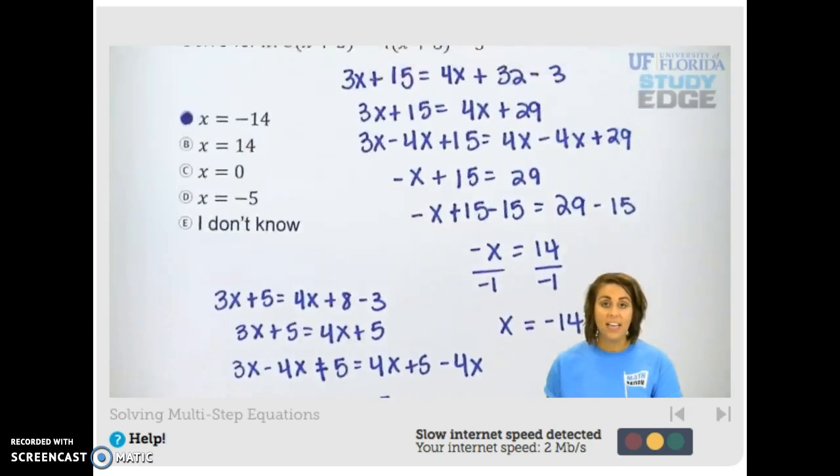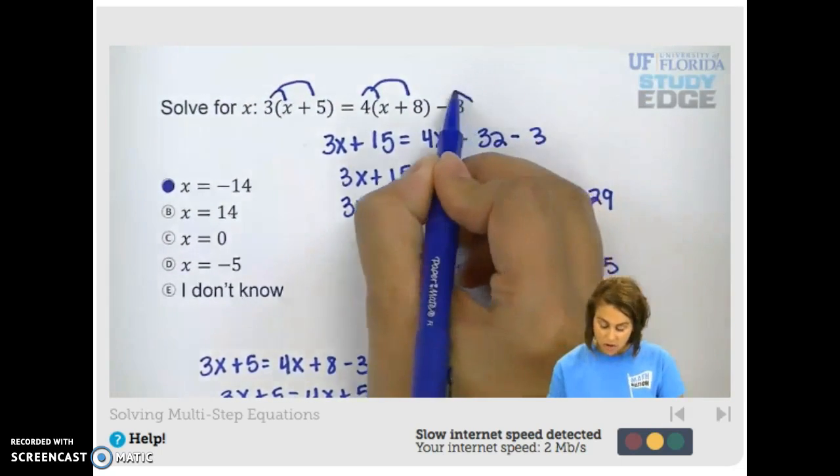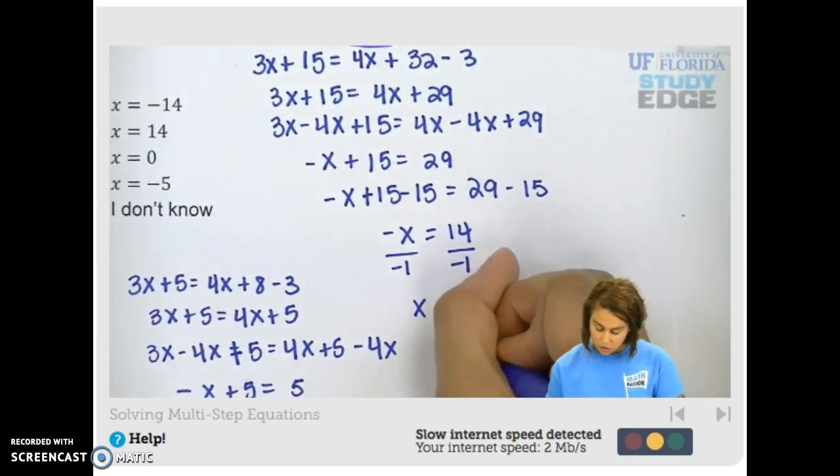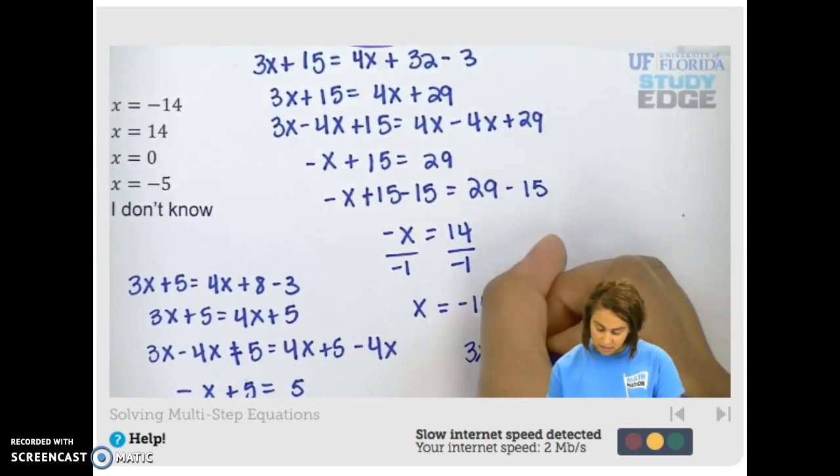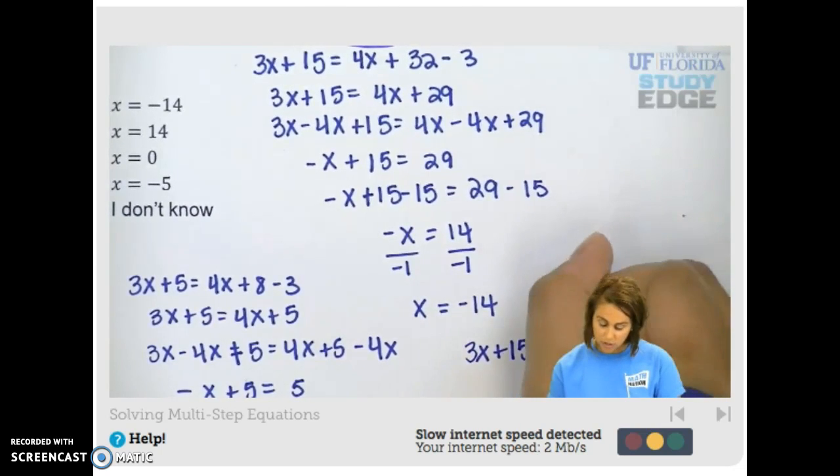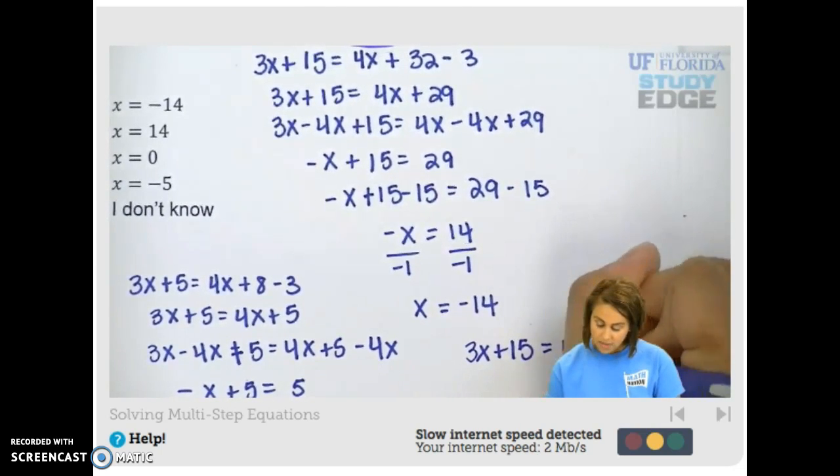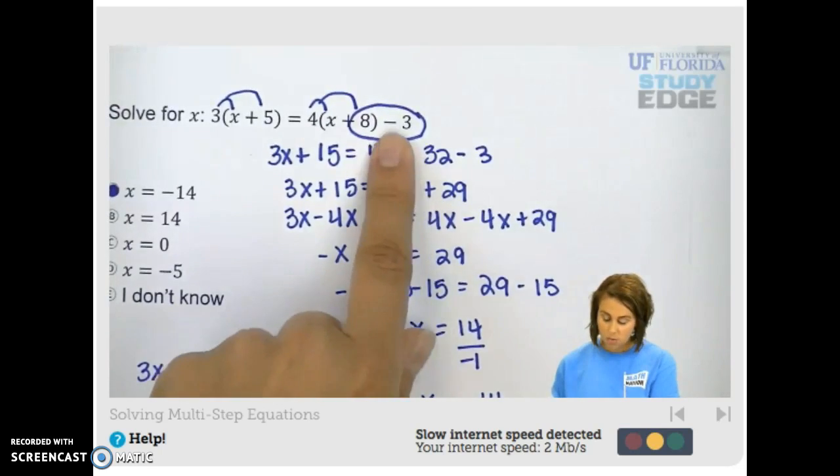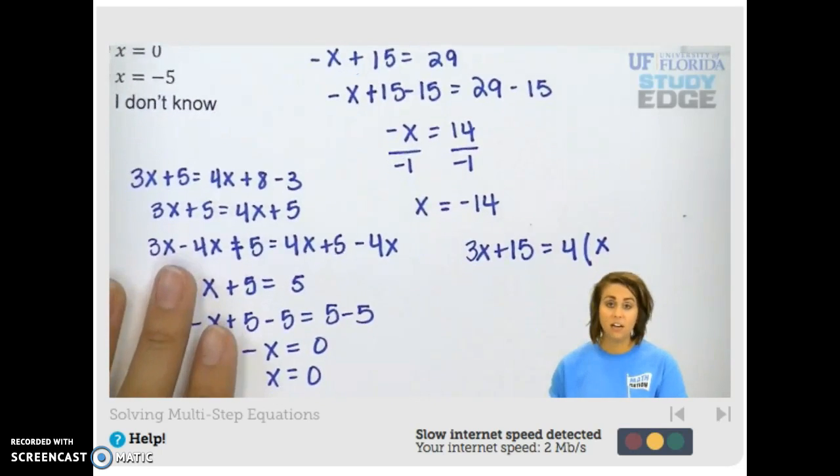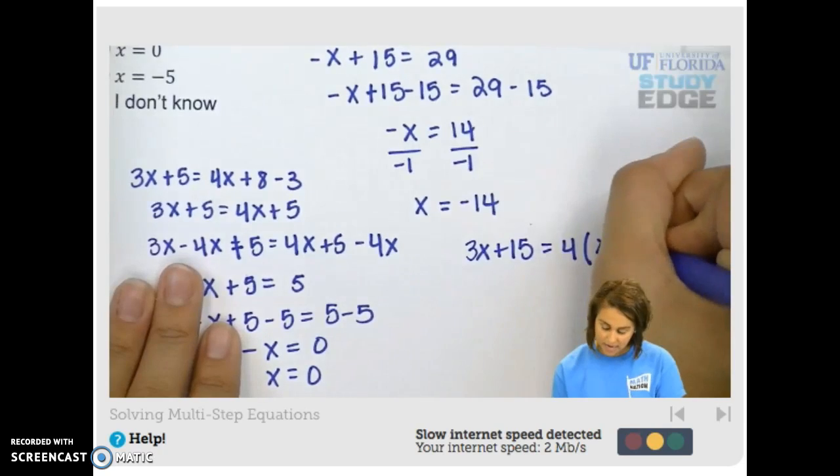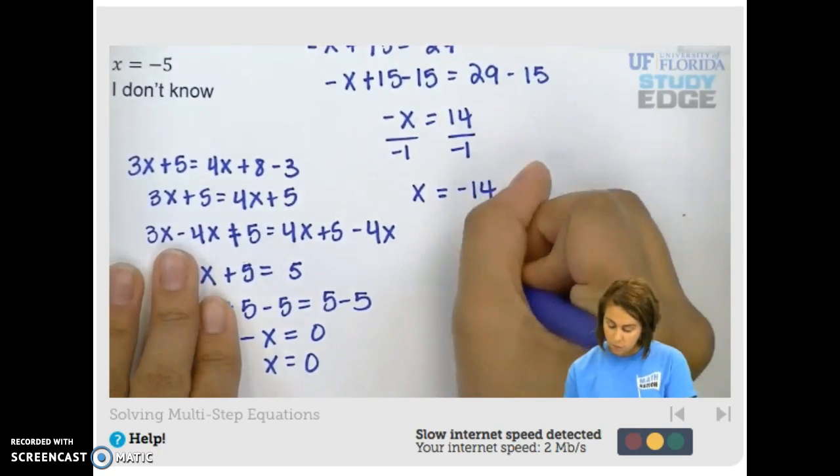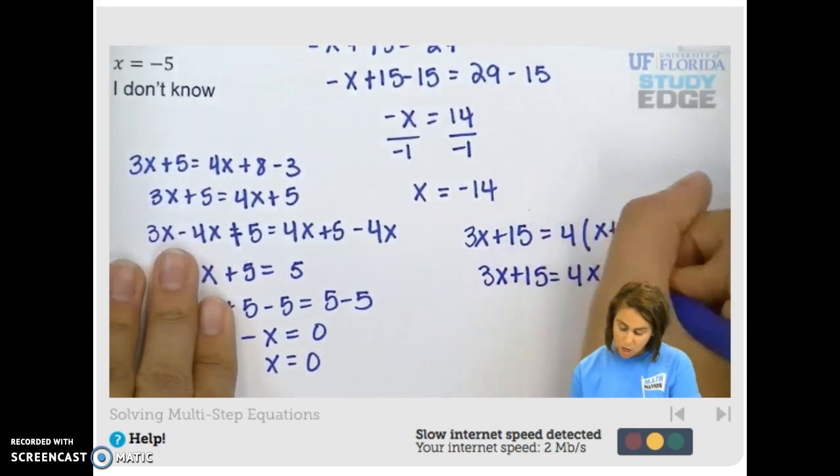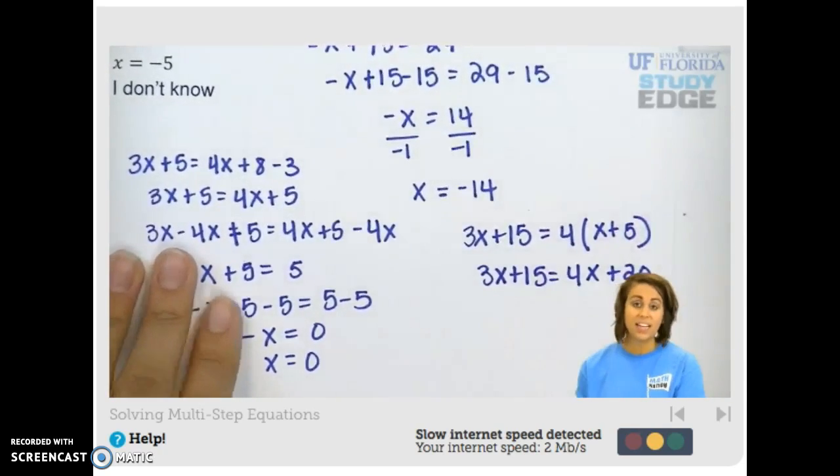Now, if you added 8 and 3 before you distributed, suppose you had 3x plus 15, so you distributed the right side correctly, and then you had 4 times x plus 5 instead of plus 8, and then minus 3. When you distributed your 4, you would end up with 4x plus 20 on the right-hand side.